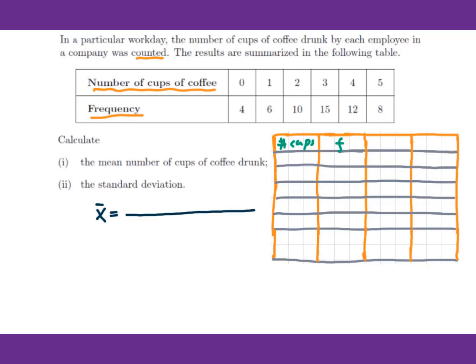For the mean, we can do x-bar equals. We can use the original table. First of all, we do how many coffee all together. Therefore, 0 times 4, 1 times 6, 2 times 10, 3 times 15, 4 times 12, 5 times 8. You add together divided by the number of values, which means summation of all frequencies. We figure out the summation of frequencies equals 55. You add all these together, you will get 159. So we do 159 divided by 55 equals 2.89.